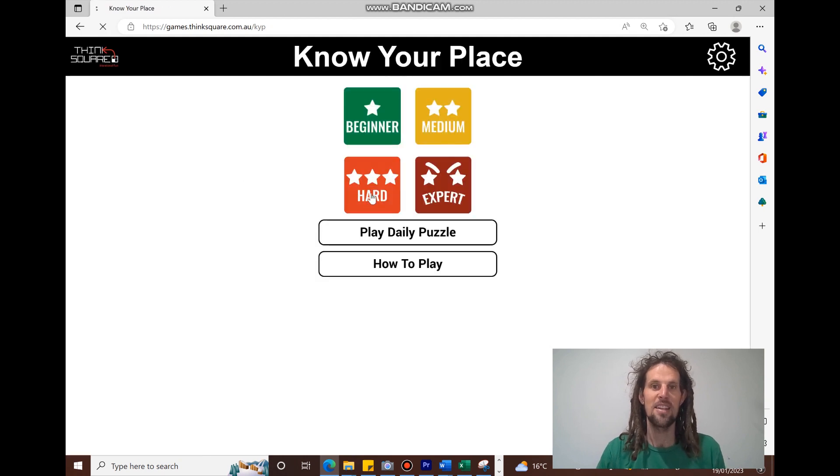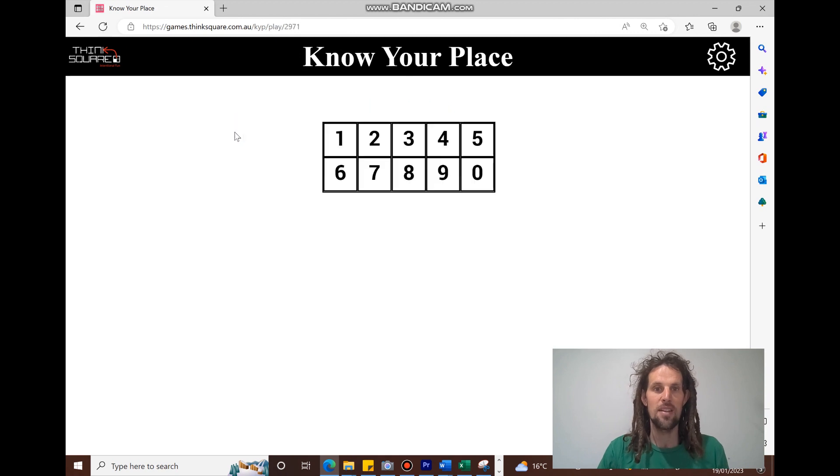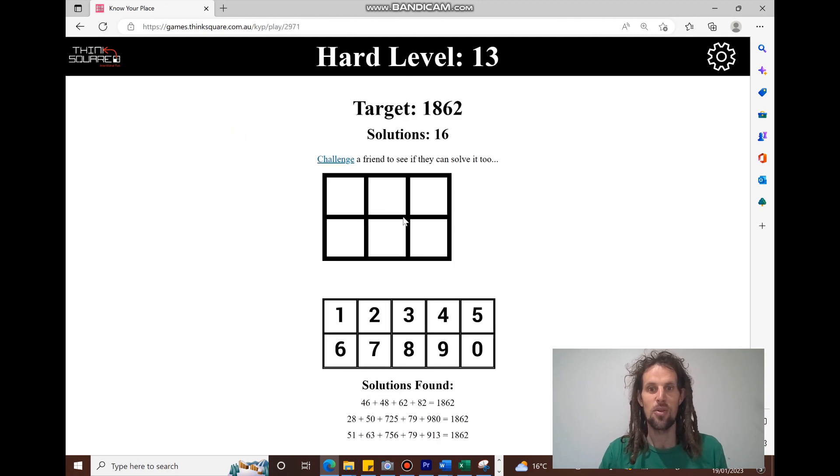The harder ones have 3 by 2 as a grid. So you're going to create, in this case, 2 three-digit numbers going across left to right, and then 3 two-digit numbers going down. Again, you just click the numbers and pop them in.